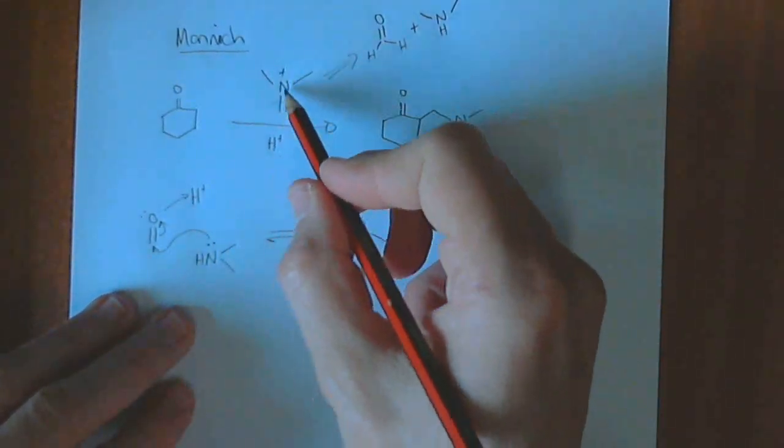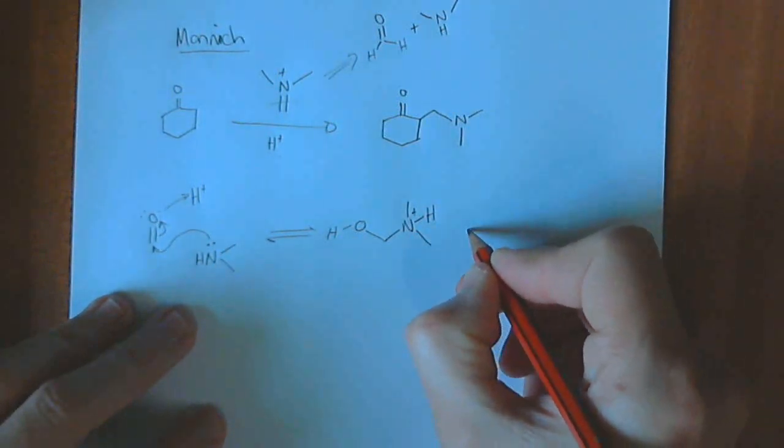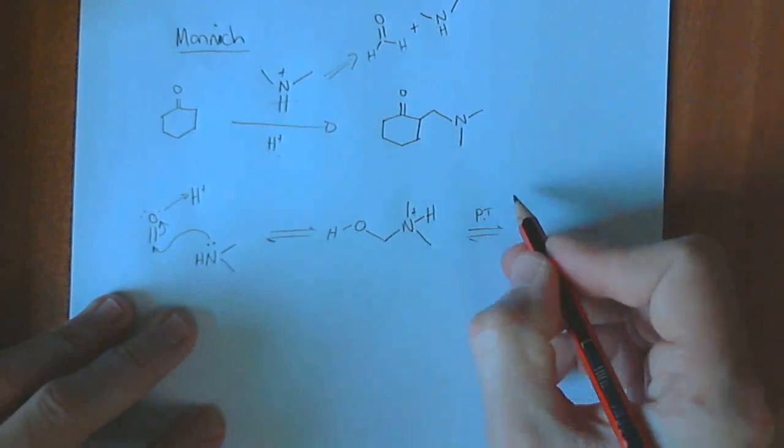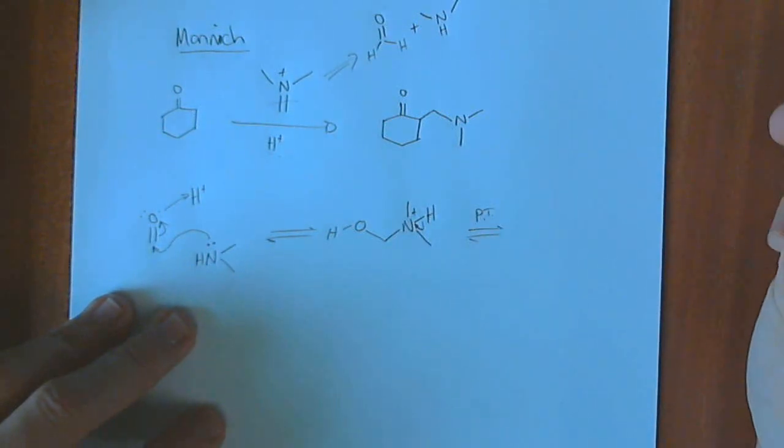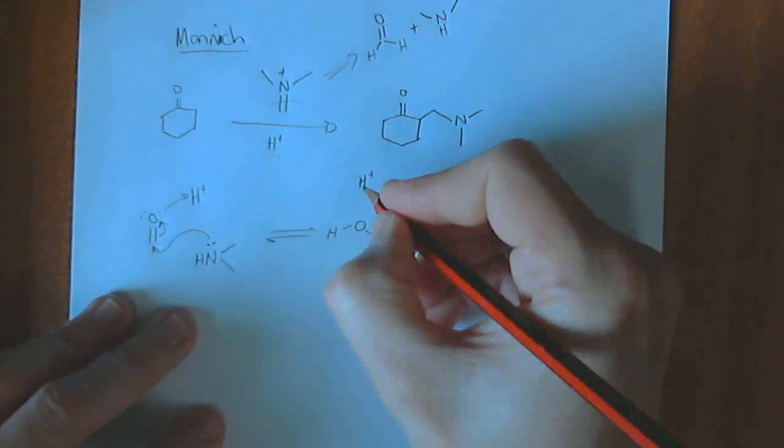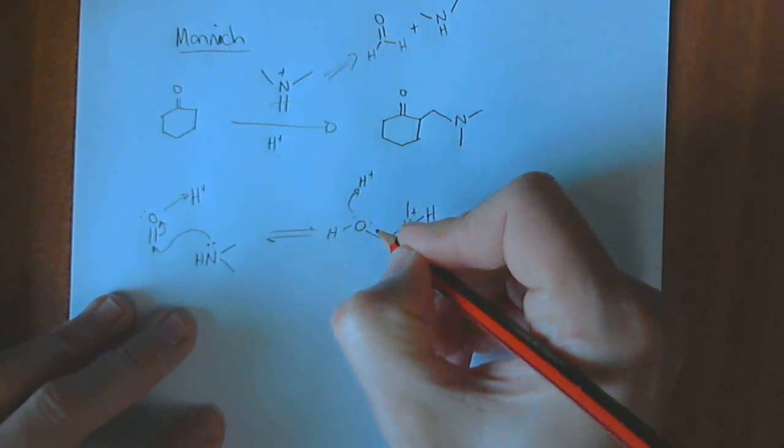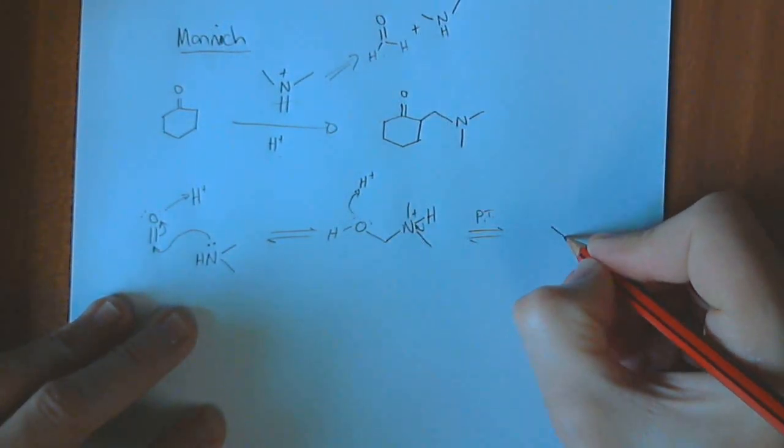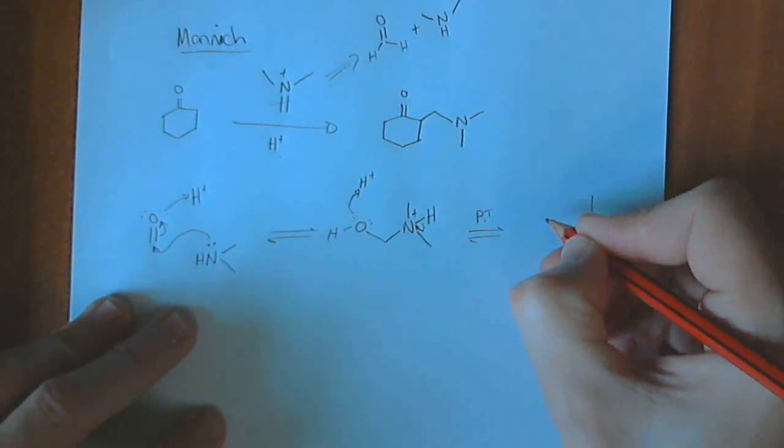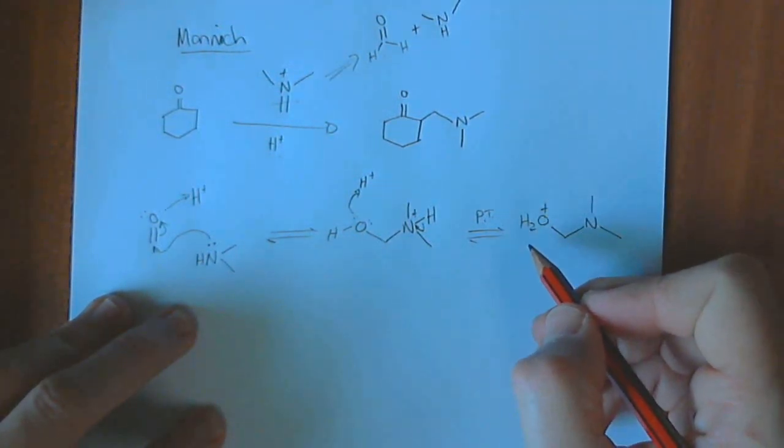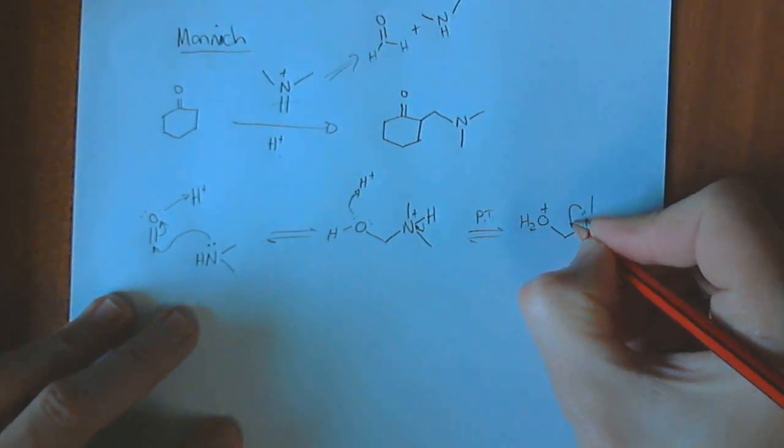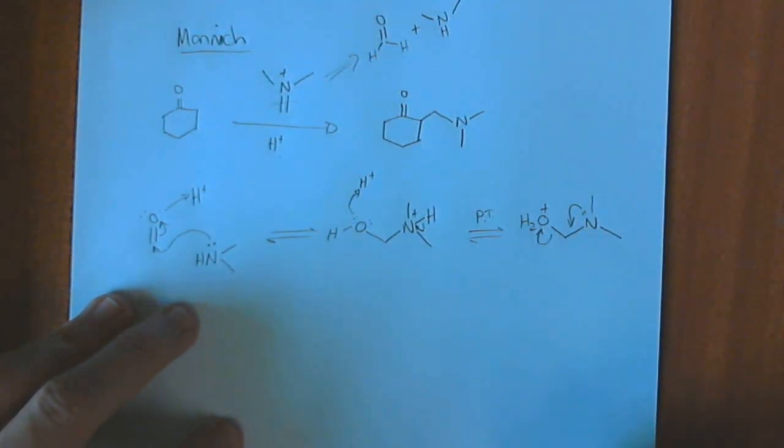We can then push forward towards the iminium intermediate. We want to do a proton transfer. We write proton transfer, but we know what's happening is actually this proton is being given off to the solution, and another proton from somewhere else is being picked up by the oxygen lone pairs. Again, this is an equilibrium. We're just pushing forward towards our product that we want to get to. Now we have an OH2+, like this. We've made this into a good leaving group. Nitrogen lone pair can now kick in to kick out our water leaving group like that. The equilibrium gives us the iminium intermediate, positively charged.